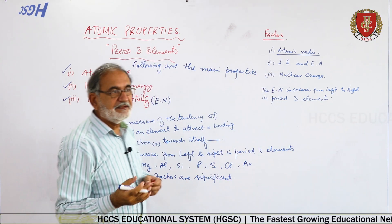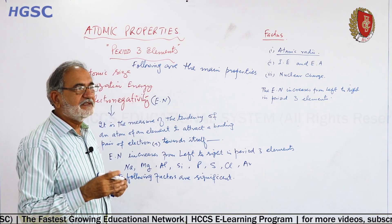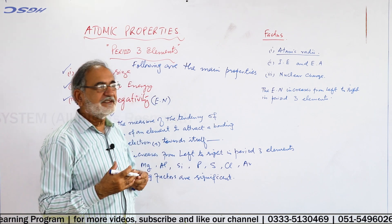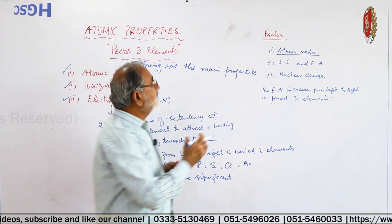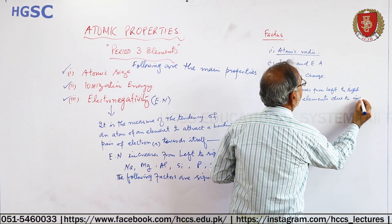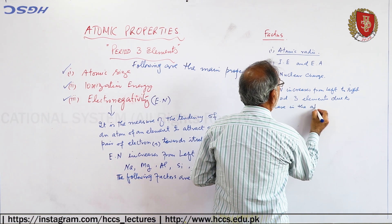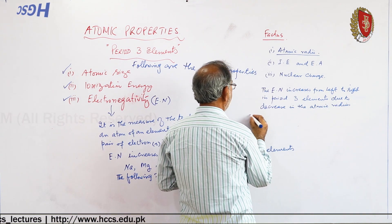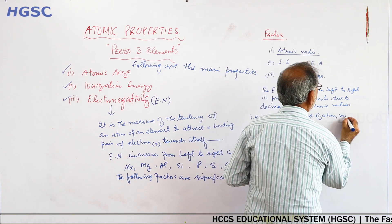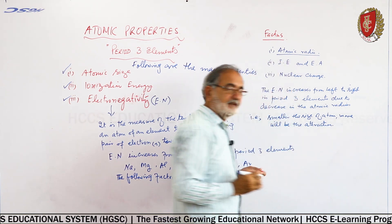Electronegativity is basically the tendency of an element whereby it attracts bonded electrons more towards itself. The electronegativity increases due to a decrease in the atomic radius — that is, the smaller the size of the atom, the more will be the attraction.